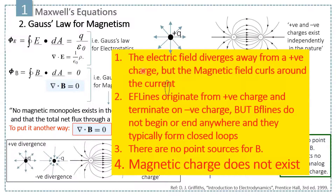The overall conclusion of this lecture is: the electric field diverges away from positive charges, but the magnetic field curls around the current. Electric field lines originate from positive charges and terminate on negative charges, but magnetic fields don't begin or end anywhere — they form closed loops. There are no point sources for B, and magnetic charge does not exist.